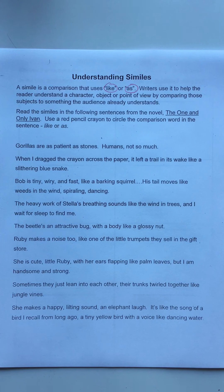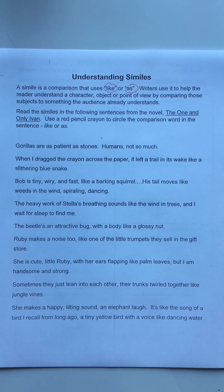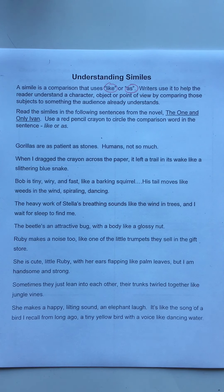Writers use similes to help the reader understand a character, an object, or a point of view by comparing subjects we don't know to something the audience already understands. So if I said I was as hungry as a horse — if you understand that a horse eats lots of hay throughout the day — then you can understand that I must be really hungry. It's a comparison that helps the reader understand something new that's being presented.